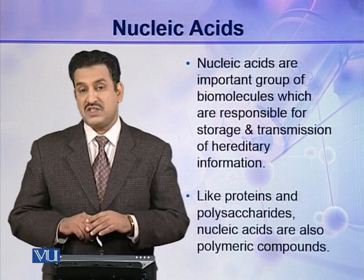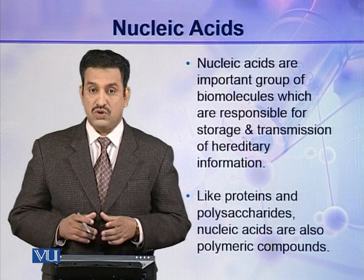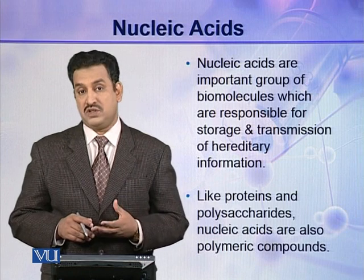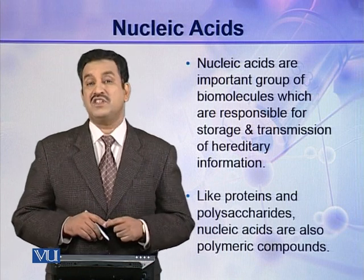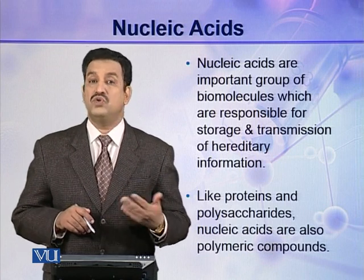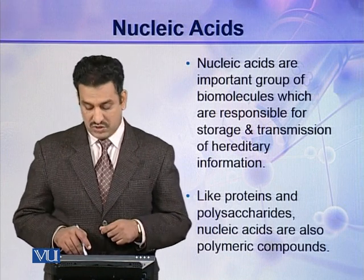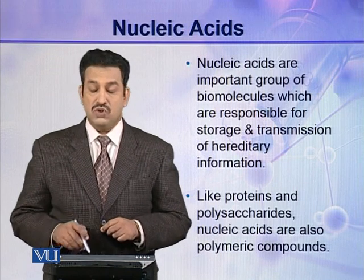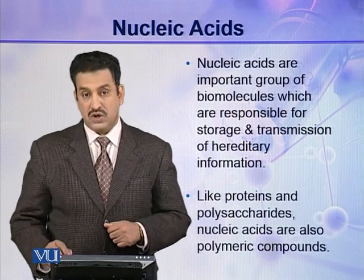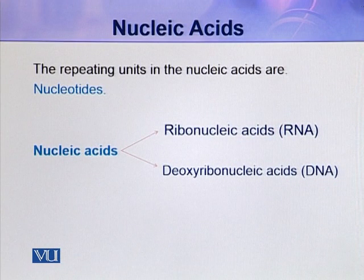Like proteins and polysaccharides, nucleic acids are also polymeric compounds. Proteins are the polymers of amino acids — amino acids are the building blocks of proteins. Similarly, polysaccharides such as starch and cellulose are made up of repeating units of glucose. In the same way, nucleotides are the repeating units in a nucleic acid; nucleic acids are polymeric compounds made up of nucleotides.